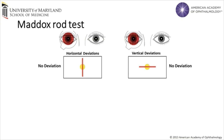The Maddox rod test can measure horizontal and vertical deviations. A Maddox rod is an instrument composed of red cylindrical lenses oriented parallel to one another. The lenses convert a point source of light into a red line. To test for horizontal deviations, the Maddox rod should be aligned so the cylinders are horizontal, and vice versa for testing vertical deviations. When the rods are aligned vertically, the patient fixates on a point source of light and will see a horizontal red line with the covered eye and the original light source with the other eye. With the Maddox rod covering the deviating eye, ask the patient what they see.